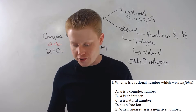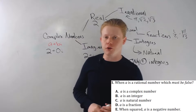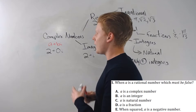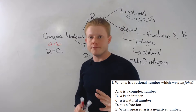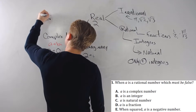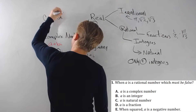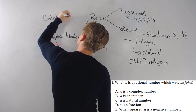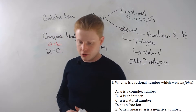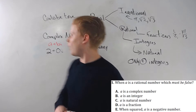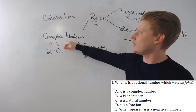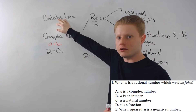Here's an example: if A is rational, which must be false? Whenever I have a logical operator question, I flip it. 'Must be false' turns into 'could be true.' Now let's go through the choices. A is a complex number — well, all numbers are complex numbers, so that actually must be true. Since we only need 'could be true,' that one works fine.